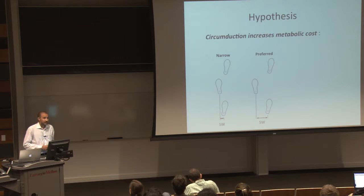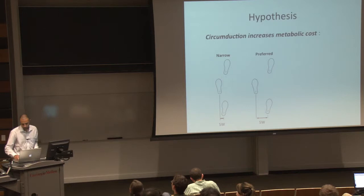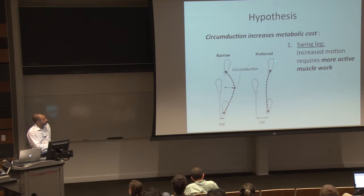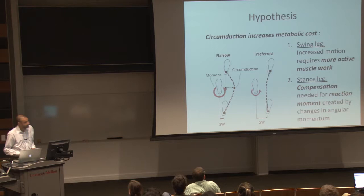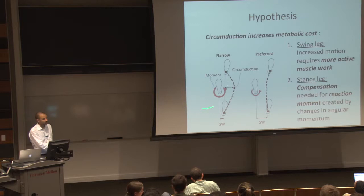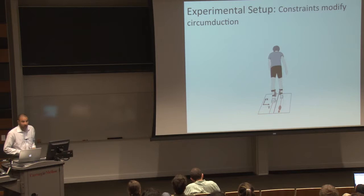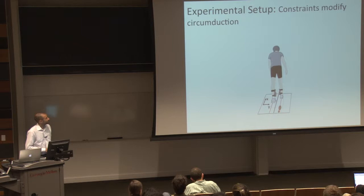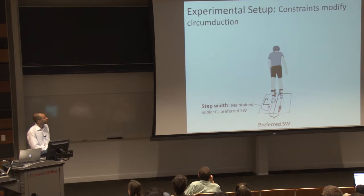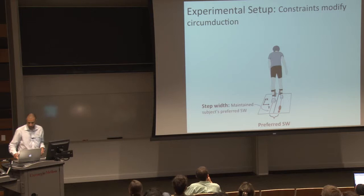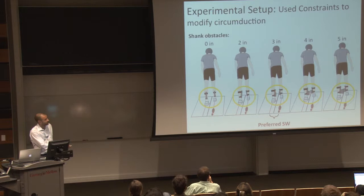Our hypothesis is that circumduction does increase metabolic cost, and it does so in a couple of ways. As you circumduct, you increase the motion of the swing leg, which takes more active muscle work and increases cost. Additionally, the increased swing leg motion creates a reaction torque at the stance leg, and you have to compensate for that, which also takes additional work. To examine this, we used constraints to modify circumduction — instead of having subjects walk with narrower and narrower step-widths, we used two constraints: subjects maintain their preferred step-width, and a series of shank obstacles to gradually increase the amount of circumduction.